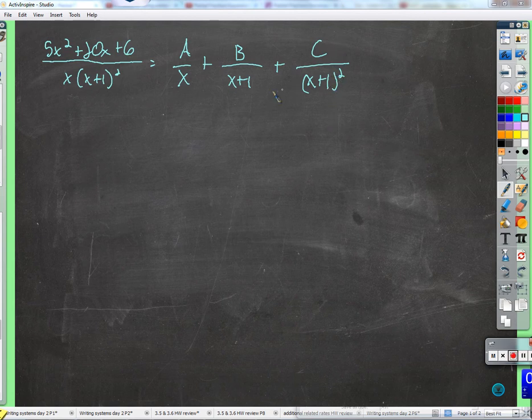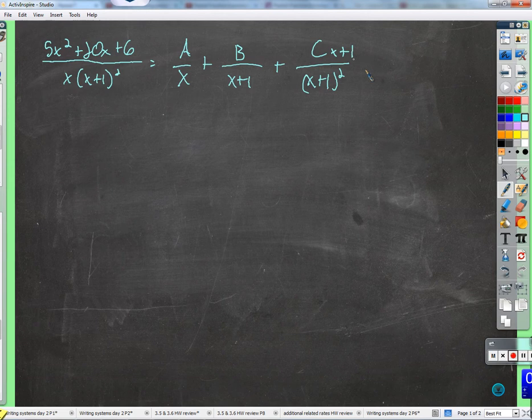I told him that if you have a repeated linear factor, since this itself is quadratic, you need to have a linear factor up here, one degree less. That's incorrect.